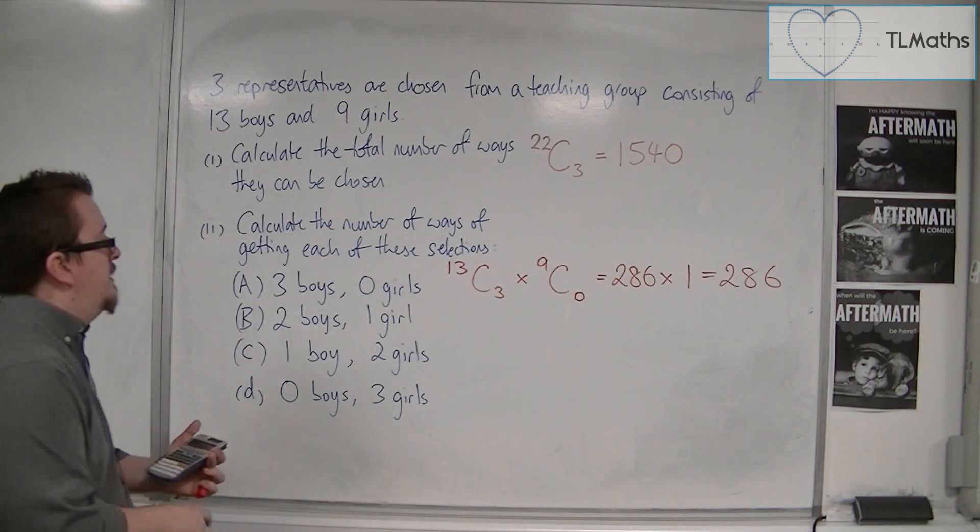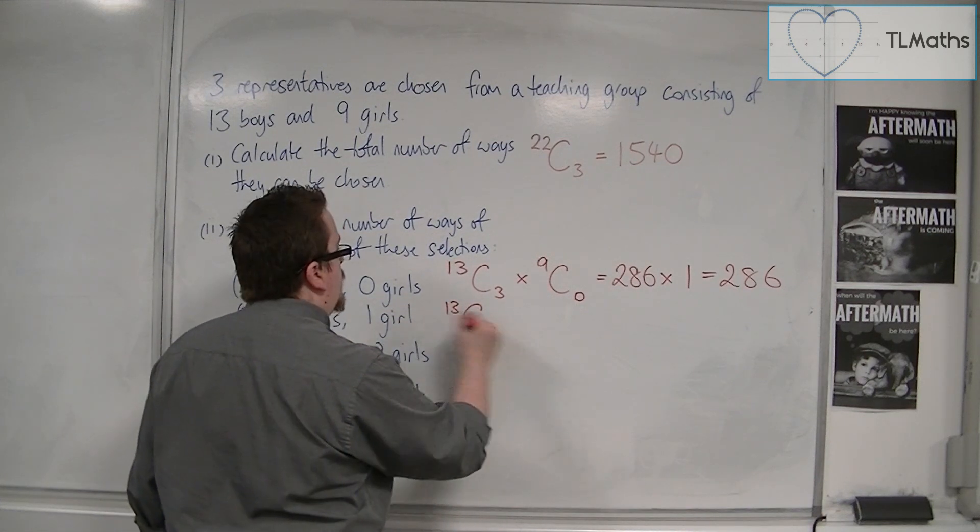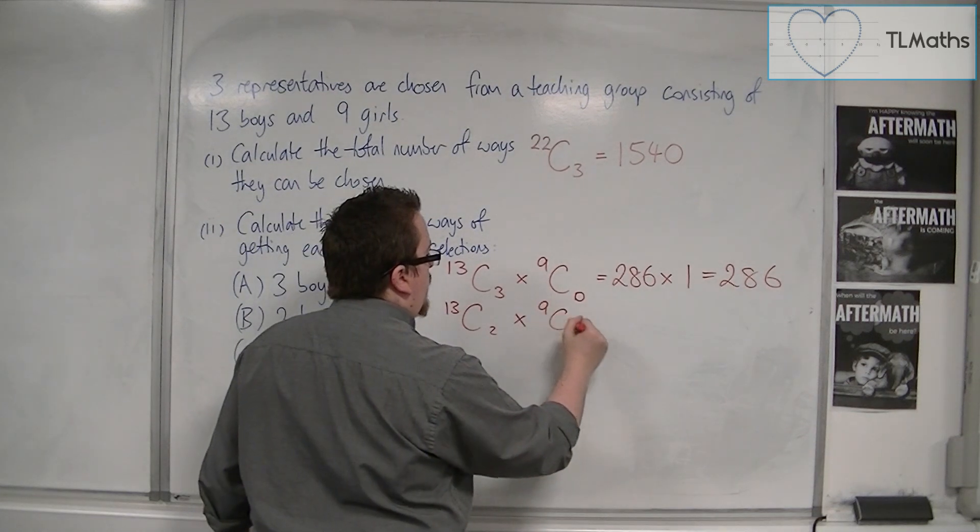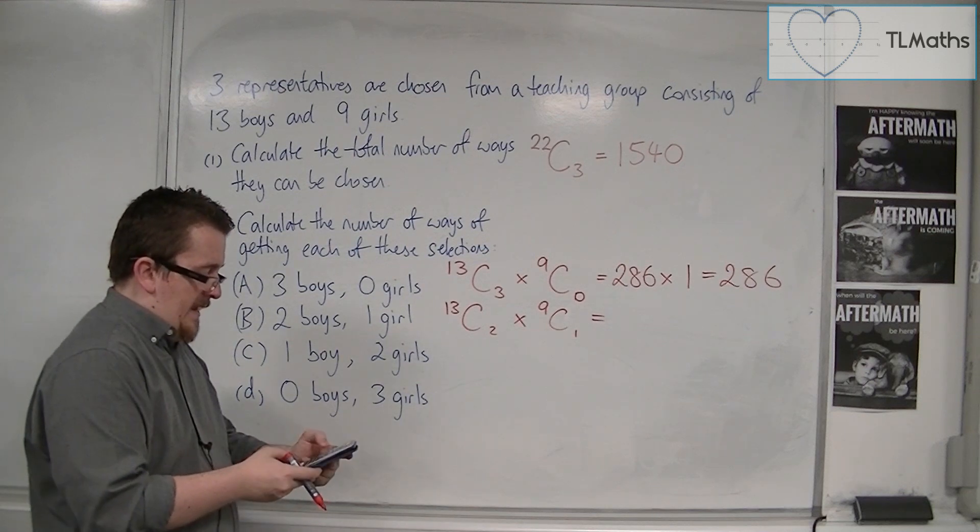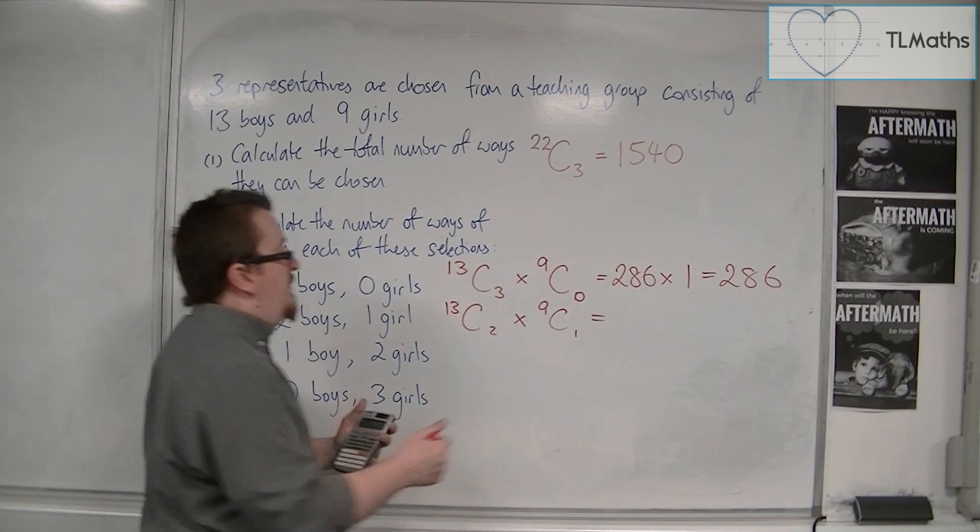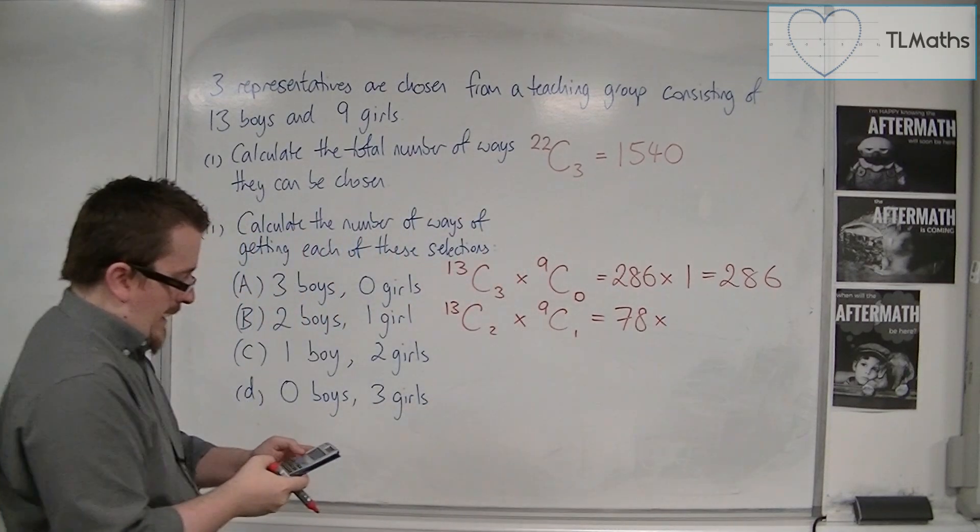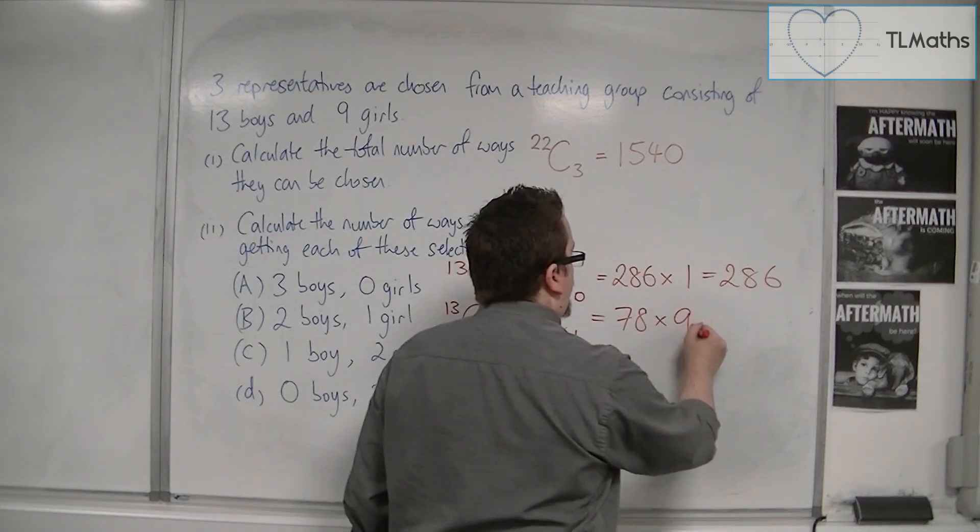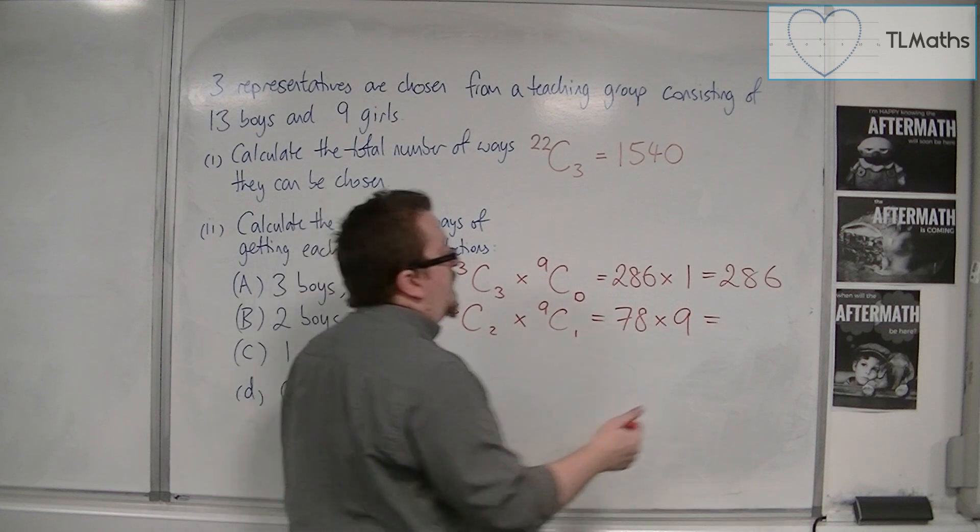Two boys and one girl. So out of the 13, I want two boys, and out of the nine girls, I want one. And I multiply those together. So 13 NCR 2 is 78, and 9 NCR 1 is 9. So 78 times 9 is 702.